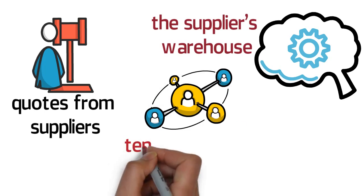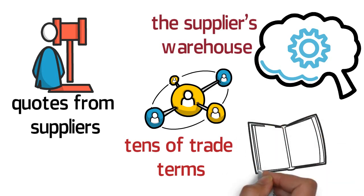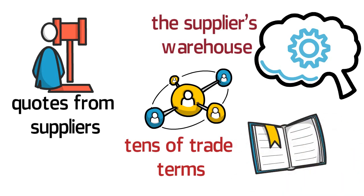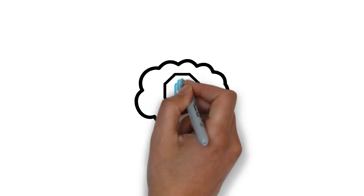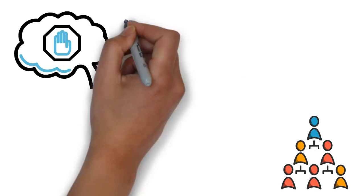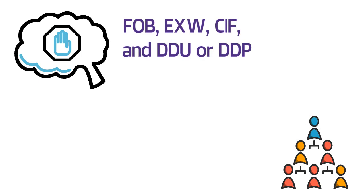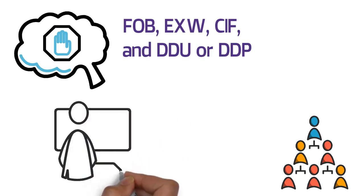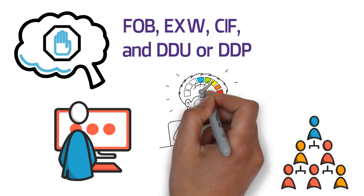In international trading, there are tens of trade terms. The International Chamber of Commerce (ICC) publishes a book every two years, regulating all the trade terms each time. Please don't panic — you don't have to memorize all of them. Many of these terms are only helpful for large quantity trading. The most frequently used trade terms are FOB, XW, CIF, and DDU or DDP. Now let me discuss these trade terms one by one, with real-life examples to help you understand the situations where they apply.